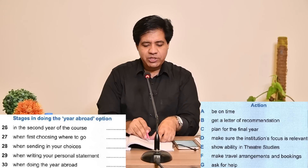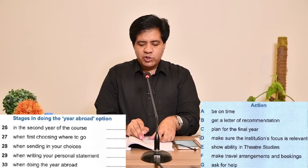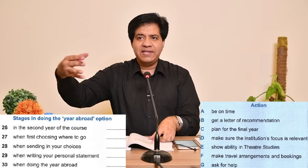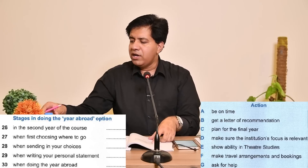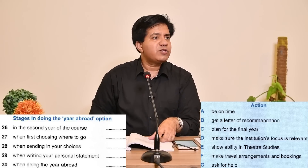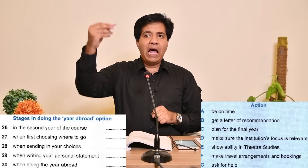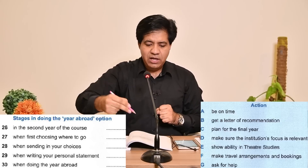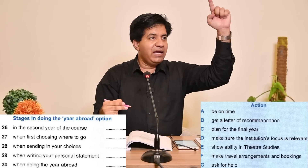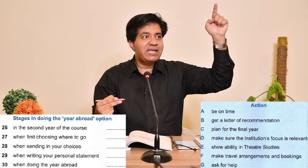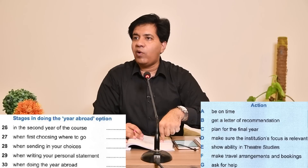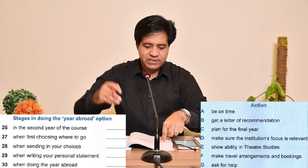Option F: make travel arrangements and bookings — if they say 'book your flight,' 'reserve a room in the hotel,' that is a travel arrangement. Option G: ask for help — ask someone for help. Now, the writing hand will move between the action options A through G, while the other hand stays on the question — question 26, second year of the course. Let's see what you have to do in the second year of the course.